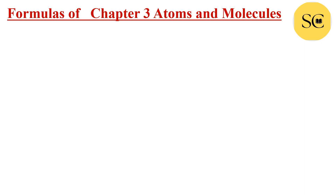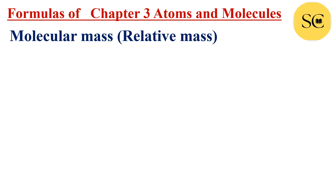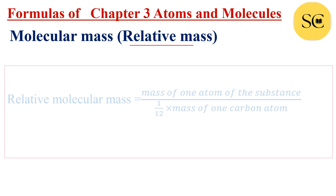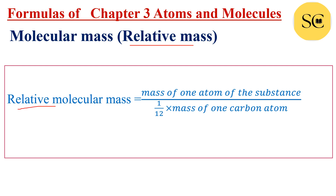Now, formula of Chapter 3: Atoms and Molecules. First, molecular mass or relative molecular mass. Relative molecular mass is equal to mass of one atom of the substance upon 1/12 into mass of one carbon atom. So we need to find the molecular mass of a substance divided by 1/12 into mass of one carbon atom.